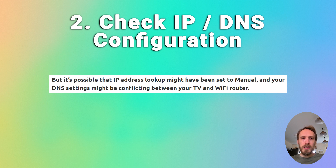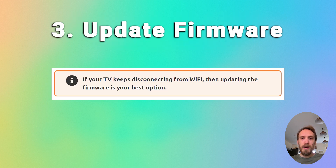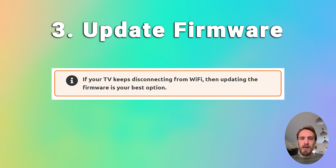You can also try updating your TV's firmware. If your TV keeps disconnecting from Wi-Fi, updating the firmware is usually the best option. That will be somewhere in Settings > Support > Software Update. Make sure Auto Update is on, and there should also be a Check Now or Update Now button. Older models of TV might need to update the firmware by USB — there are steps on how to do this in the linked article below.